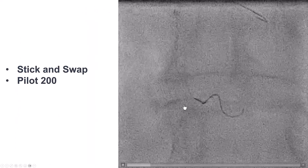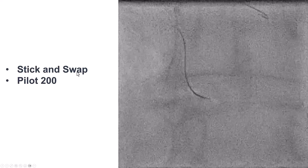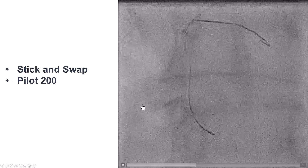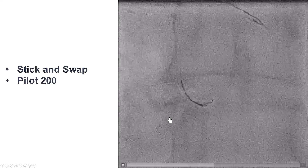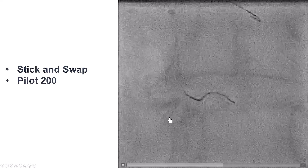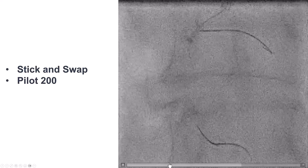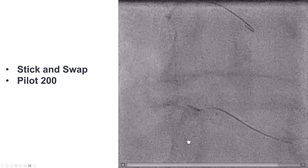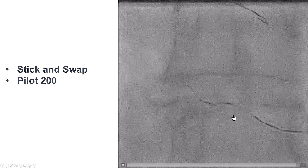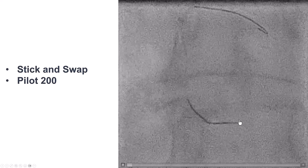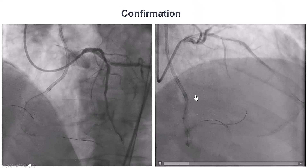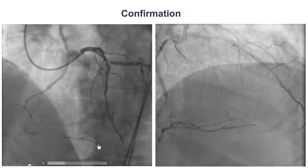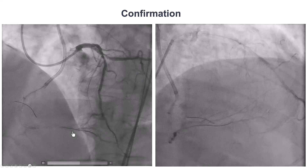We performed the stick-and-swap technique, using a stiff guide wire to puncture and then a Pilot 200 to switch, given the diffuse disease and calcification in the vessel. It took a few attempts, but eventually through the superior-facing port of the stingray we were able to advance the guide wire. With contralateral injection, we confirmed that we were in the distal true lumen.